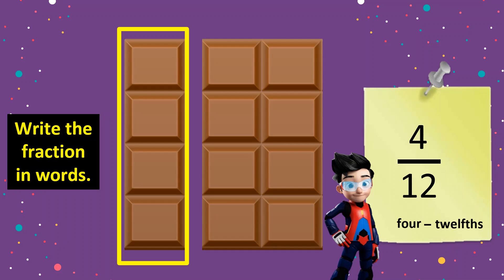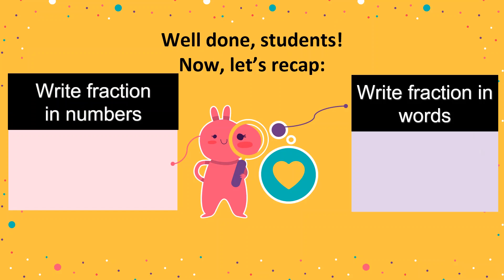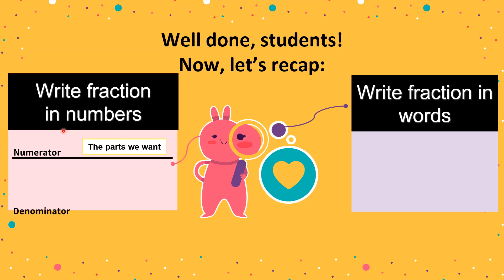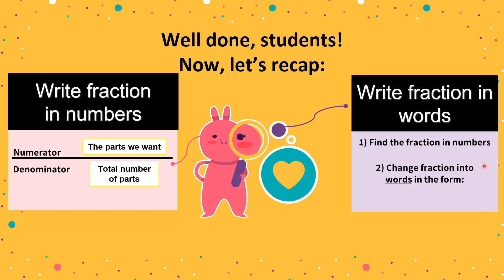Let's have a quick recap of what we've learned today. We practiced writing fractions in numbers, which requires us to find the numerator — the number of parts that we want — and the denominator — the total number of parts. We also learned how to write fractions in words: after finding the fraction in numbers, we change it into words in the form of cardinal dash ordinal. Cardinal numbers are one, two, three, and so on. Ordinal numbers are third, fourth, fifth, and so on. Thank you, that's all for today. Take care.